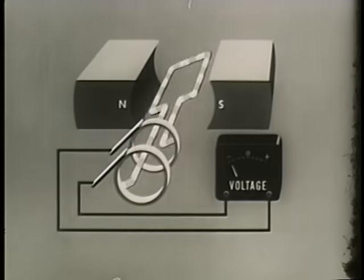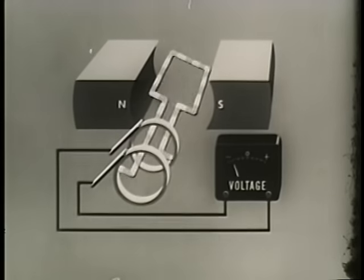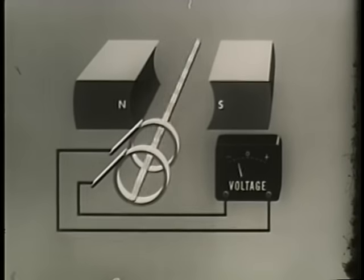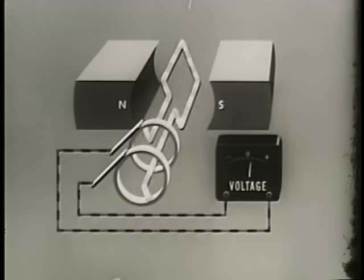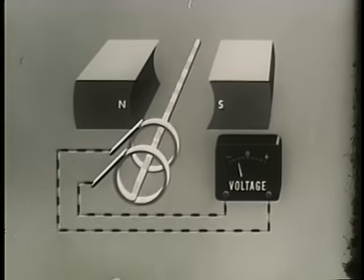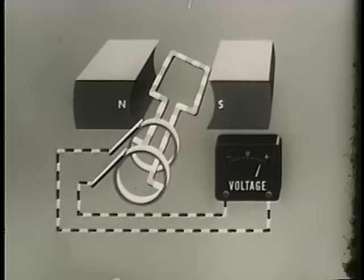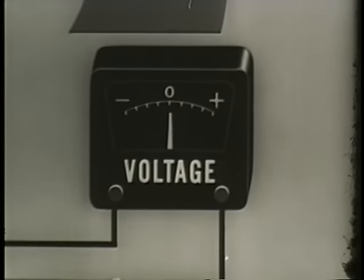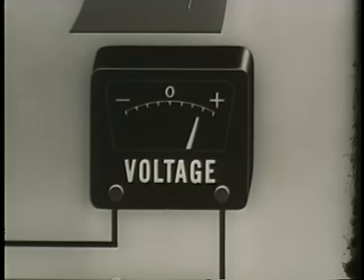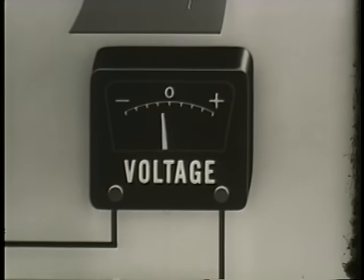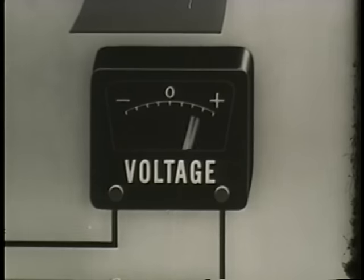Since they cut lines of force of opposite directions as they rotate, EMFs of opposite polarity will be generated in the conductors. In order to have current flow in this circuit, polarities of the two conductors must be opposite. The amount of EMF generated at any instant is determined by three factors: the strength of the magnetic field, that is the number of lines of force; the length of the conductor cutting the lines of force; and the velocity with which the conductor is turning. We can determine the amount of instantaneous EMF by a simple formula.